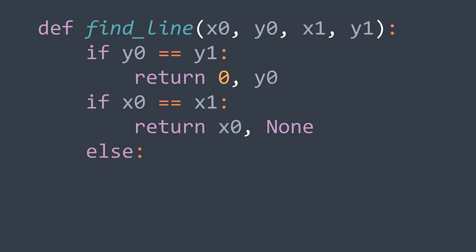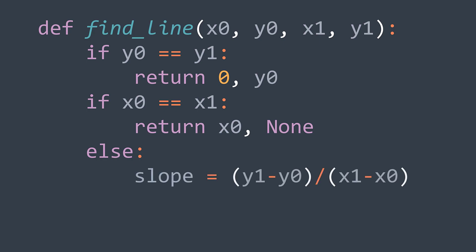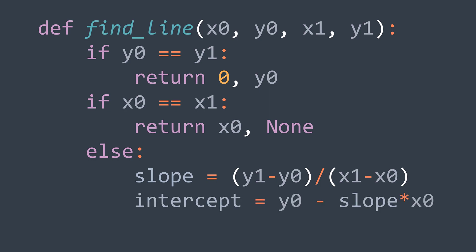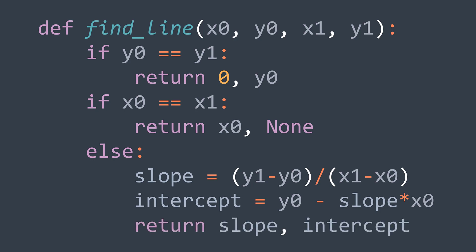Otherwise, it means we have a regular line. The slope is (Y1 − Y0) / (X1 − X0), and the intercept is Y0 − slope × X0, and we return both values. Note that we don't have the case where X0 equals X1 and Y0 equals Y1, because the problem states that all points are unique.